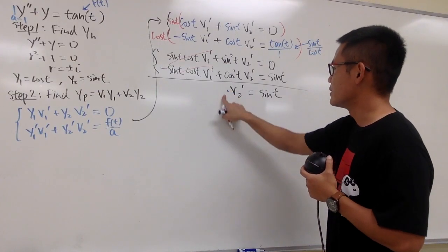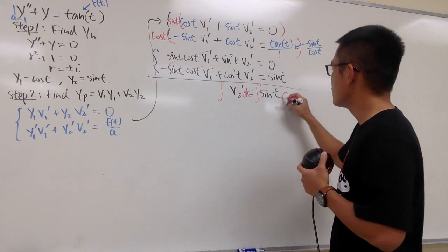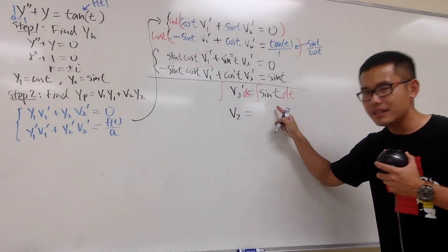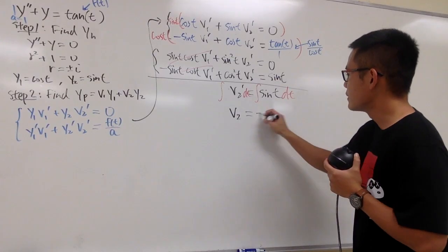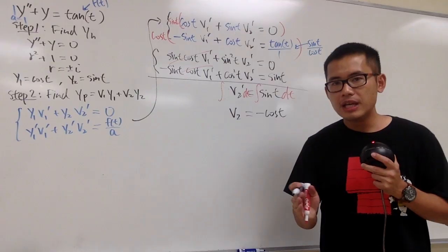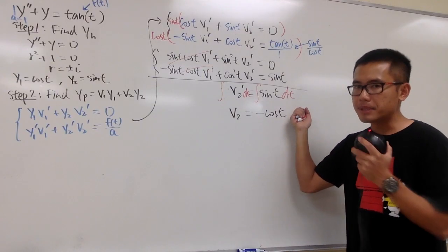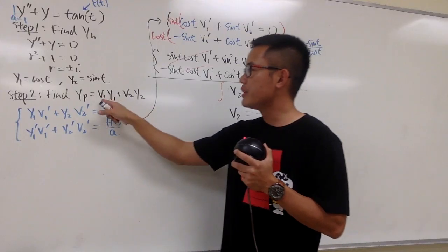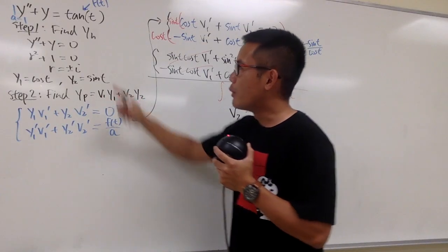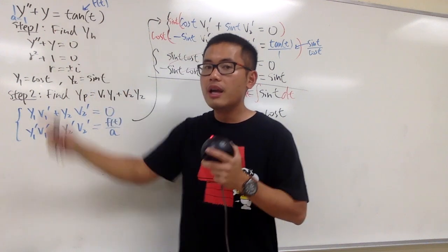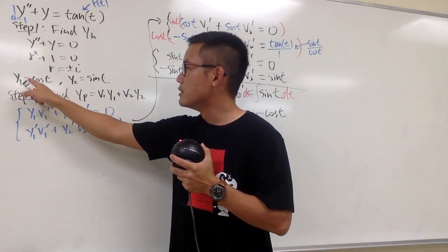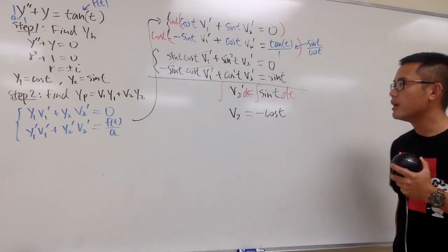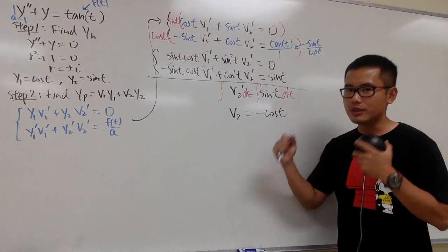We can integrate both sides with respect to t: v2 equals the integral of sine t, which is negative cosine t. Please do not add any constant of integration here — the purpose of v1 and v2 is to plug them into yp. The constants belong in the homogeneous part, c1·y1 plus c2·y2.